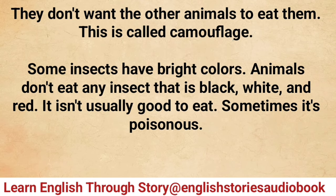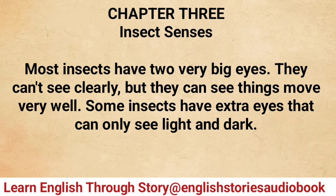Insects can use their bodies to hide from birds and other animals — this is called camouflage. Some insects have bright colors. Animals don't eat any insect that is black, white, and red — it isn't usually good to eat. Sometimes it's poisonous.